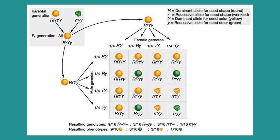Using the Punnett square, place the gametes along the sides, then determine the possible genotypes of the second filial generation. Based on the result of the Punnett square, the resulting genotypes are: 9 round yellow seed, 3 round green seed, 3 wrinkled yellow seed, and 1 wrinkled green seed.